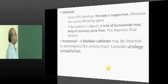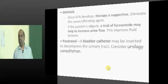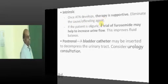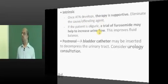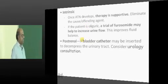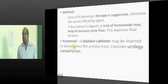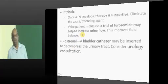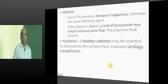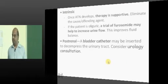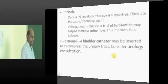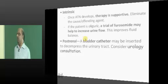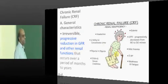If it is intrinsic renal failure, commonly that means ATN. Once ATN develops, the only thing you can do is supportive treatment and remove the offending agent. The ultimate prognosis depends on the degree of damage to the tubules. If it is post-renal failure, relieve the obstruction — call a urologist colleague. If it is BPH, obstructive uropathy, or ureteric obstruction, surgery can relieve it and the patient will respond.